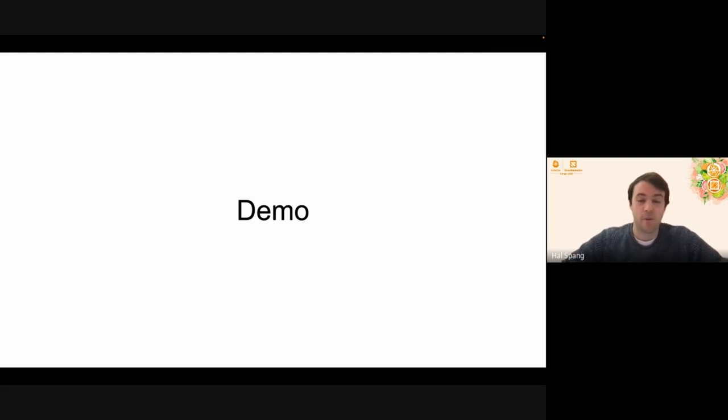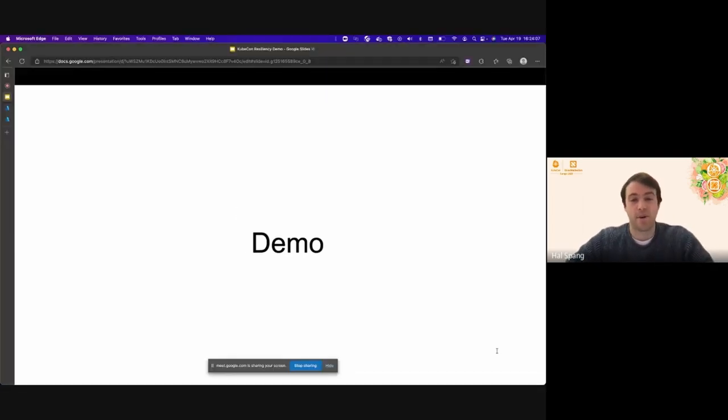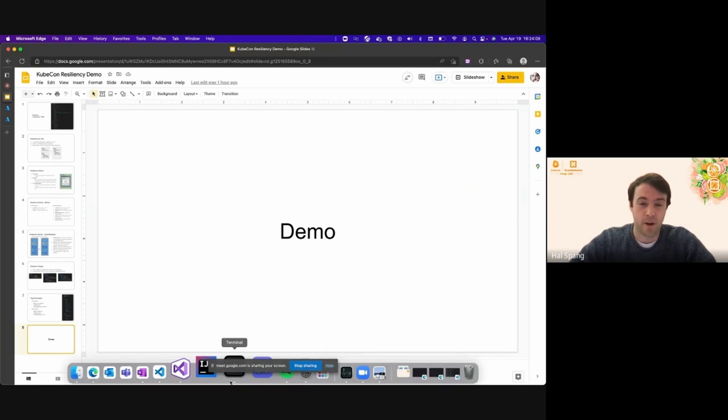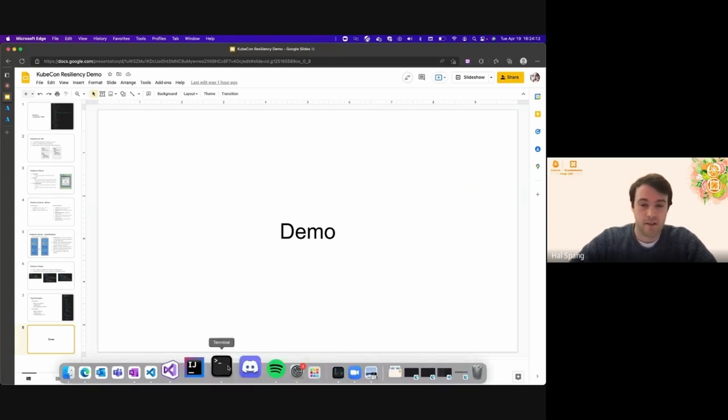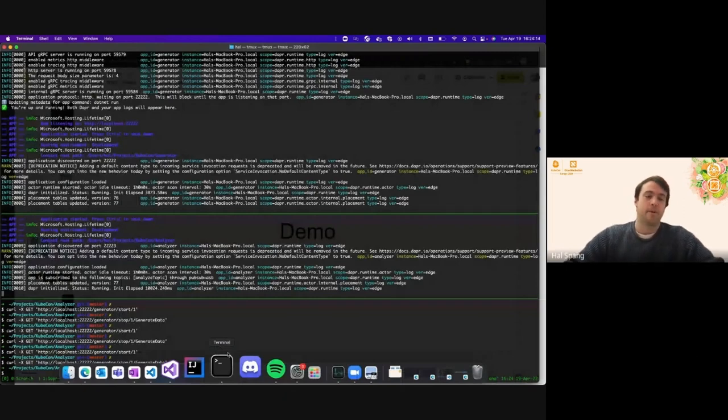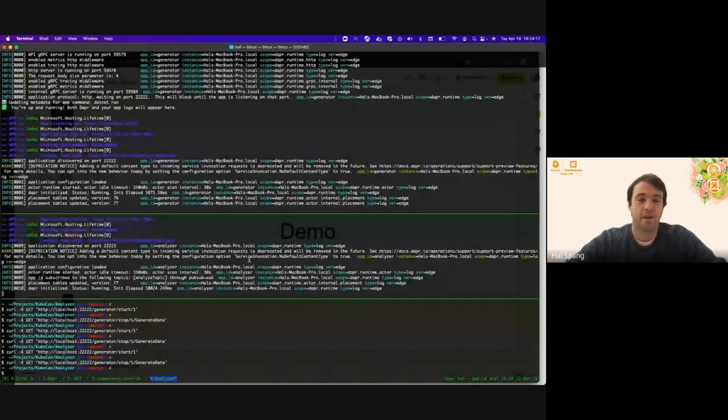So now I can show everyone a quick demo of how circuit breakers work. All right. So what I have here is I have two .NET apps, one of which I have called a generator, one of which I've called an analyzer.